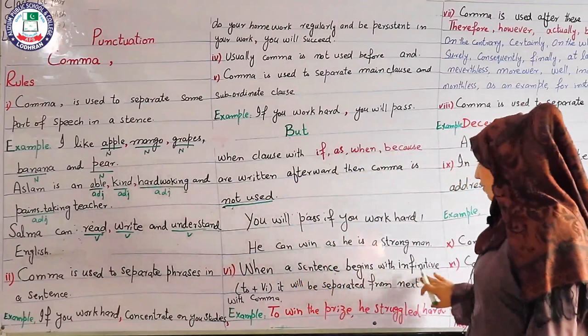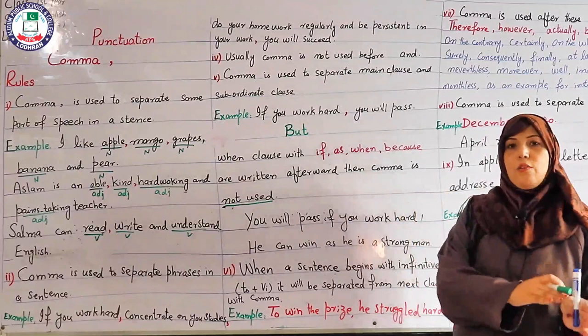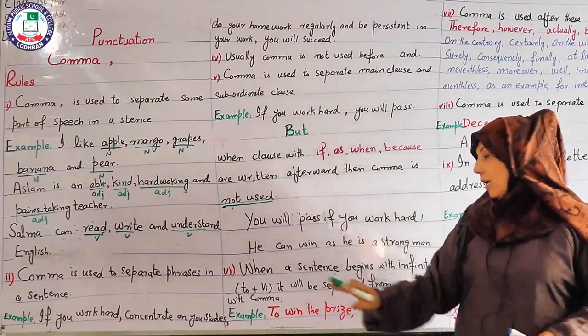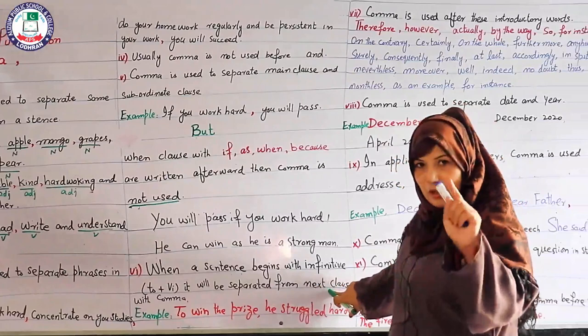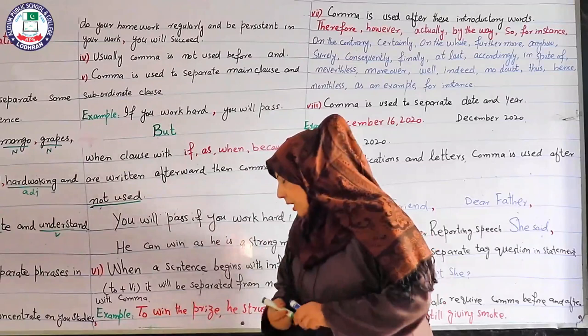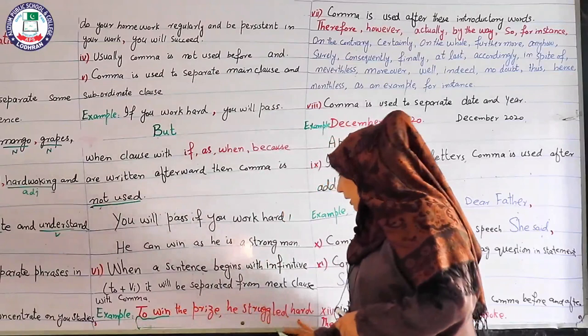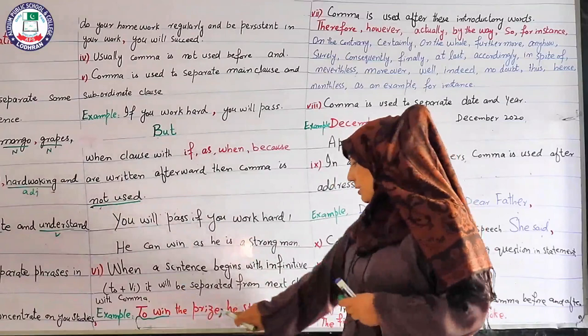Rule about infinitives: when a sentence begins with an infinitive — which is 'to' plus the first form of a verb — we separate it from the rest of the clause with a comma. For example: 'To win the prize, he struggled hard.' The infinitive phrase 'to win the prize' begins the sentence and is separated from the main clause by a comma.